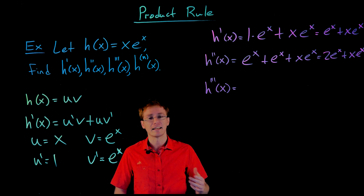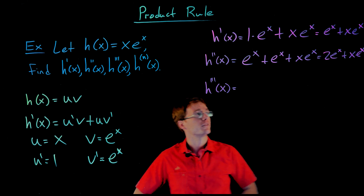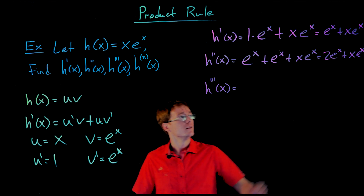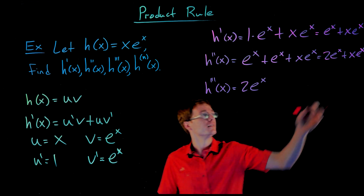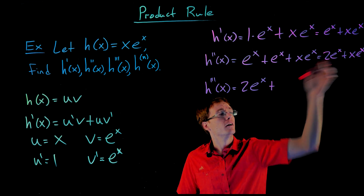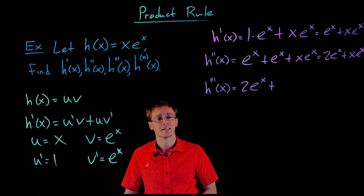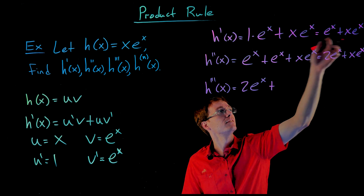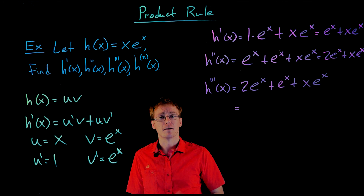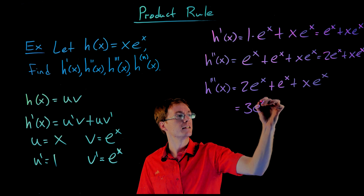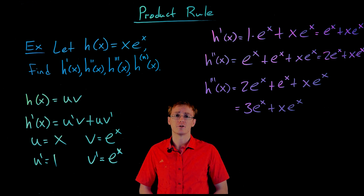For the third derivative we take the derivative of the second derivative. We differentiate 2 times e to the x using the constant multiple rule, giving 2e to the x, then add the derivative of x times e to the x, which we know is e to the x plus x times e to the x. Combining like terms, h triple prime of x equals 3e to the x plus x times e to the x.